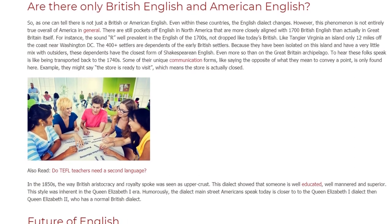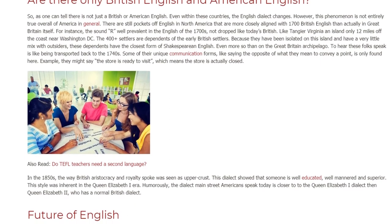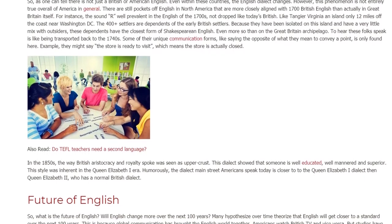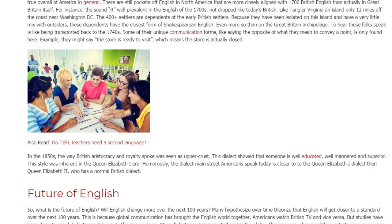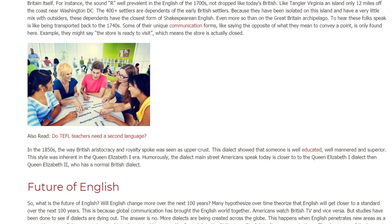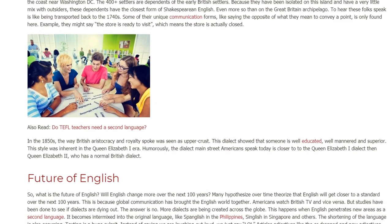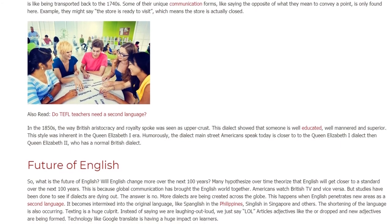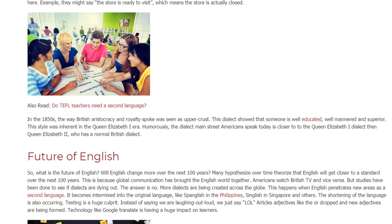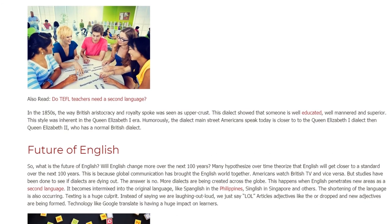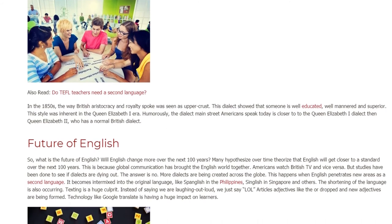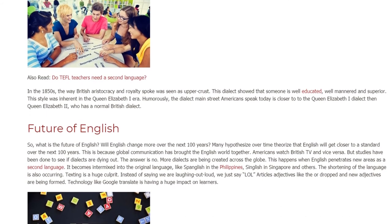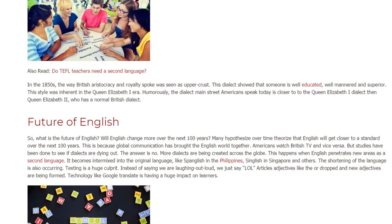To hear these folks speak is like being transported back to the 1740s. Some of their unique communication forms — like saying the opposite of what they mean to convey a point — are only found here. For example, they might say 'the store is ready to visit,' which means the store is actually closed. In the 1850s, the way British aristocracy and royalty spoke was seen as upper crust, showing someone is well-educated, well-mannered, and superior. This style was inherent in the Queen Elizabeth I era. Humorously, the dialect Main Street Americans speak today is closer to the Queen Elizabeth I dialect than Queen Elizabeth II, who has a normal British dialect.